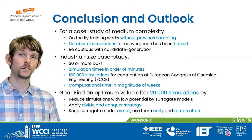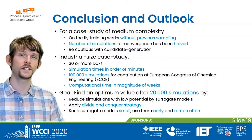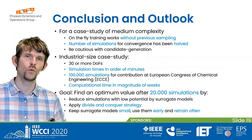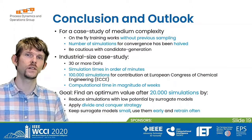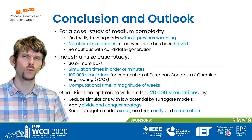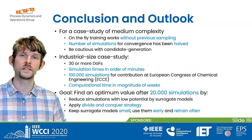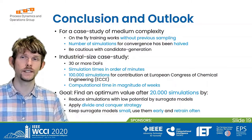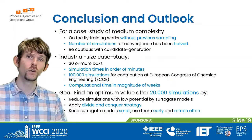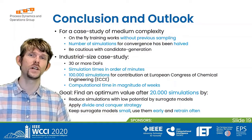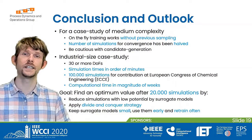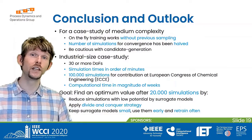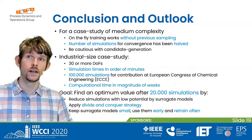In conclusion, we showed for a case study of medium complexity that on-the-fly neural network training works well with our prior sampling. We were able to halve the number of simulations needed to converge. However, we must be cautious when applying candidate generation alone, as it may lead to getting stuck in a local optimum.